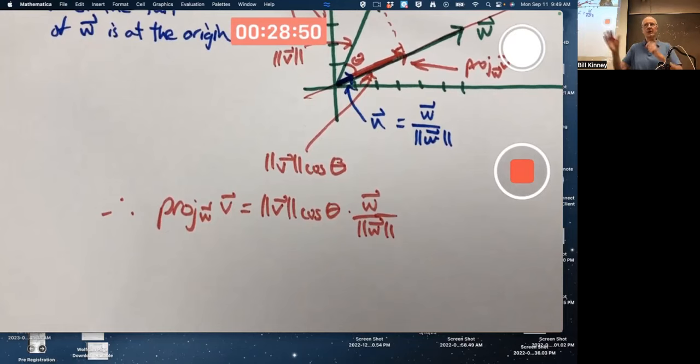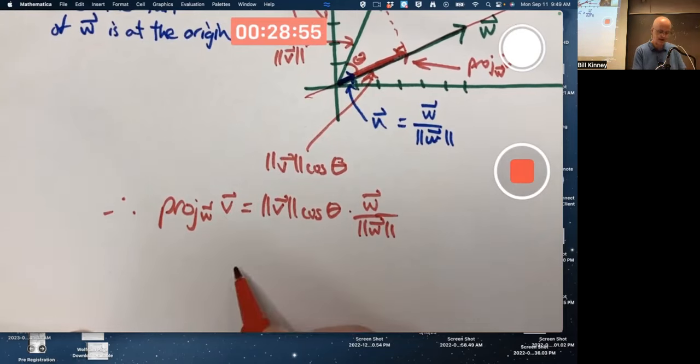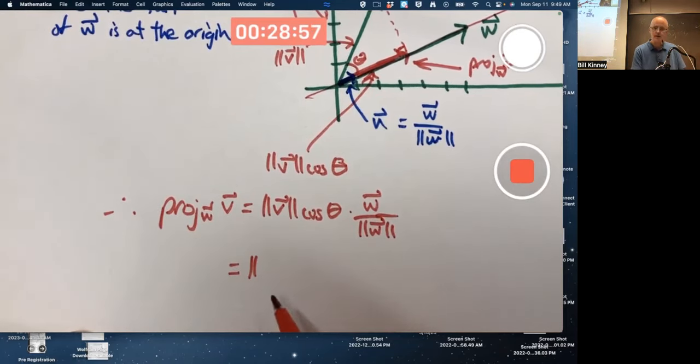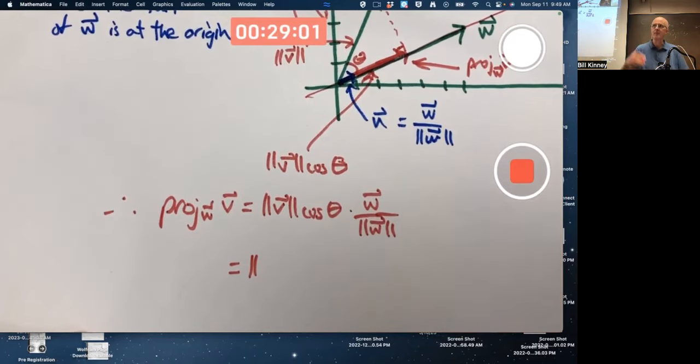Through a little bit of trickery, we can relate this to dot products. What kind of trickery? Multiply this expression by the length of W divided by the length of W.